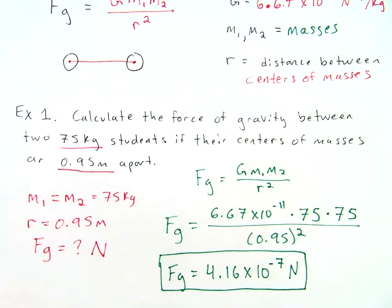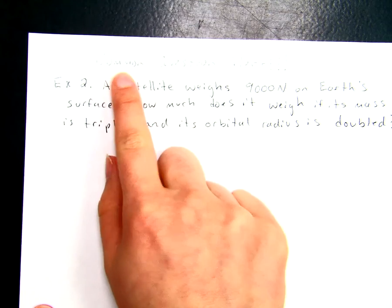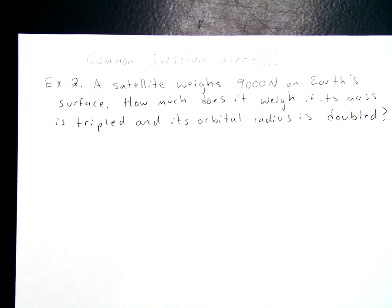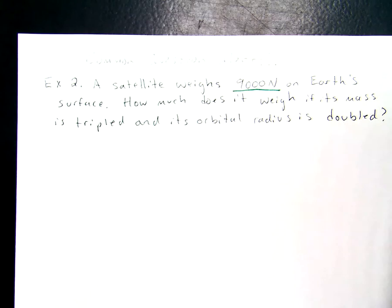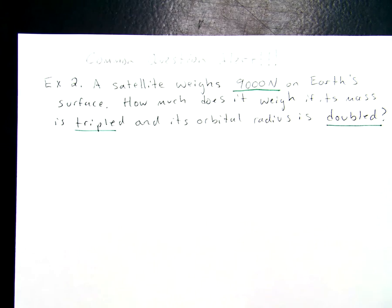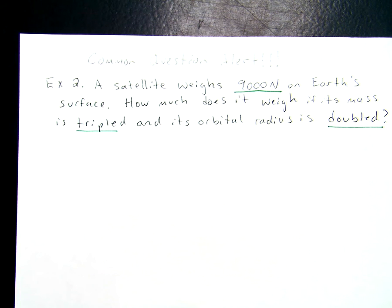The next problem that I'd like to address is what I'd like to call a common question alert. This is a very common problem. We haven't worked too much with these types of problems yet, but they are very popular as we continue throughout our physics course. Here we have a satellite weighing 9,000 Newtons on Earth's surface. How much does it weigh if its mass is tripled and its orbital radius is doubled? There aren't really numbers there. How on Earth can we go about this problem?